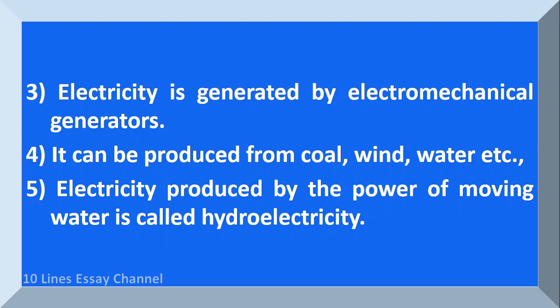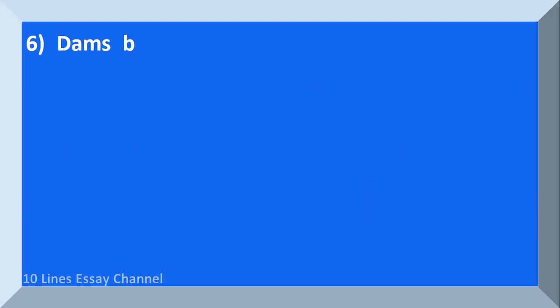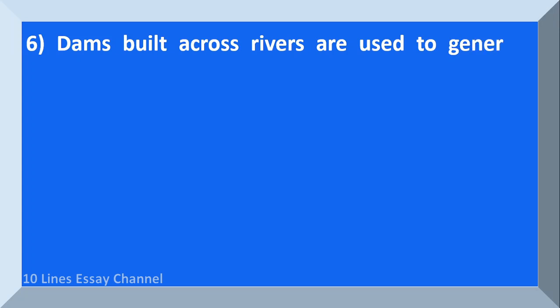Electricity produced by the power of moving water is called hydroelectricity. Dams built across rivers are used to generate hydroelectricity.